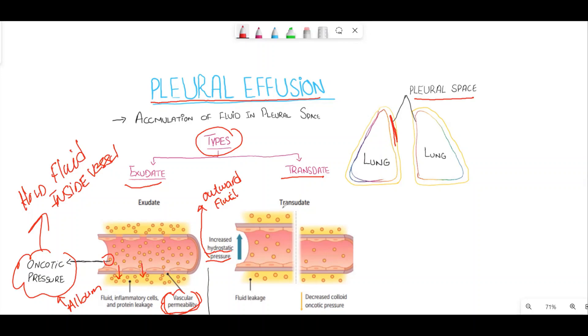What happens in transudative pleural effusion? In case of increased hydrostatic pressure, there is increased movement of the fluid outside. Another condition: there is decreased oncotic pressure, that is, the pressure determined mainly by proteins, mainly albumin. The fluid moves outside due to decreased oncotic pressure.